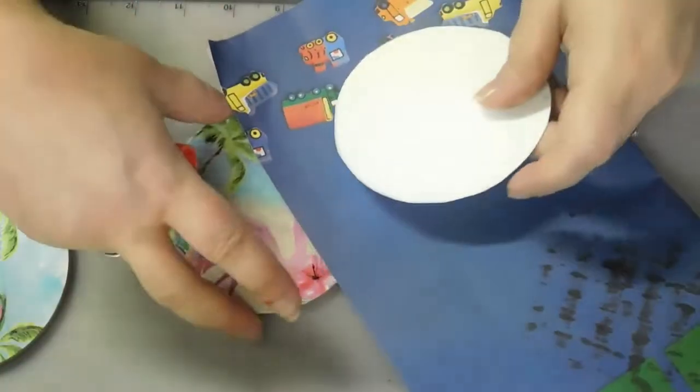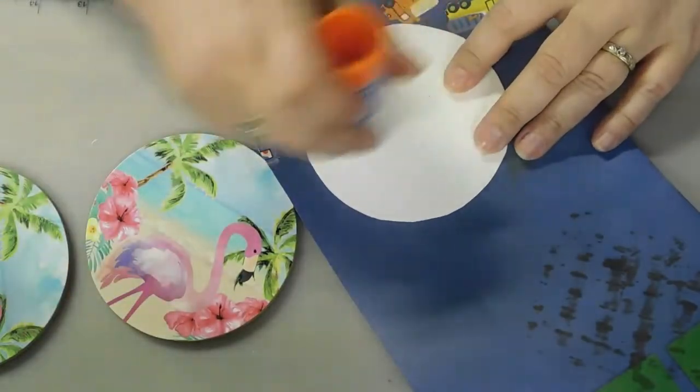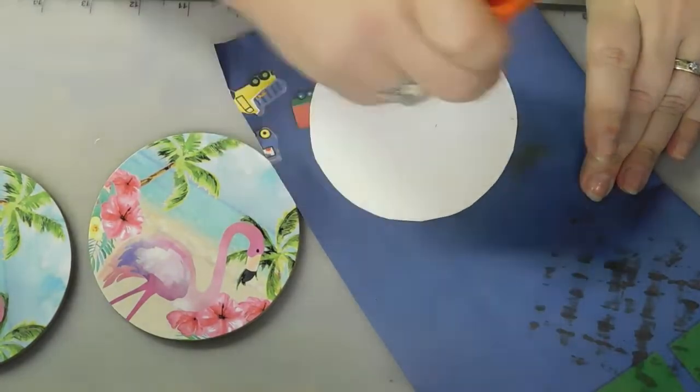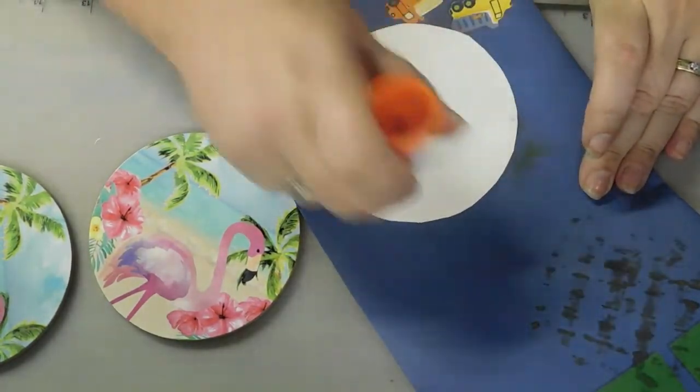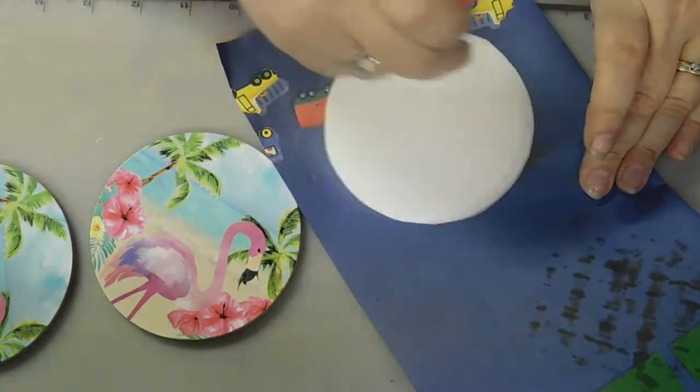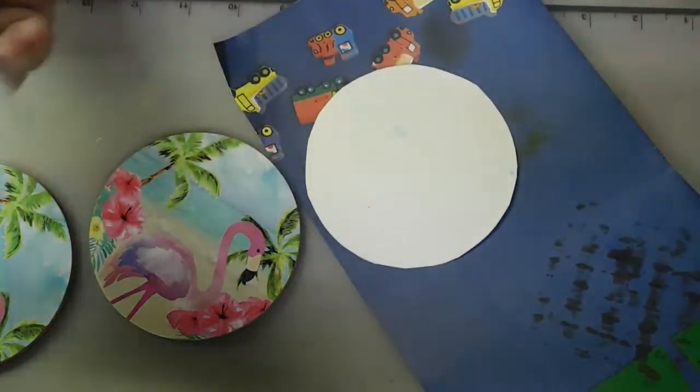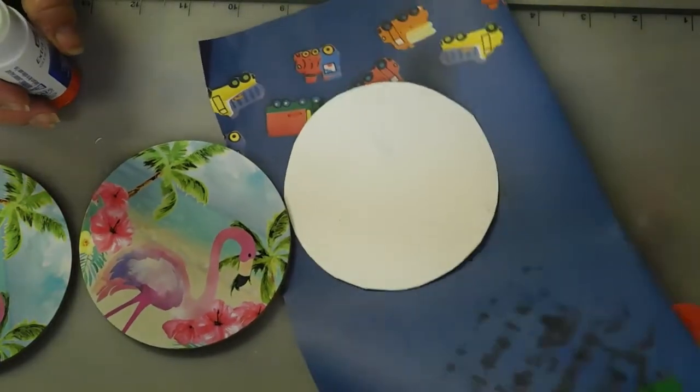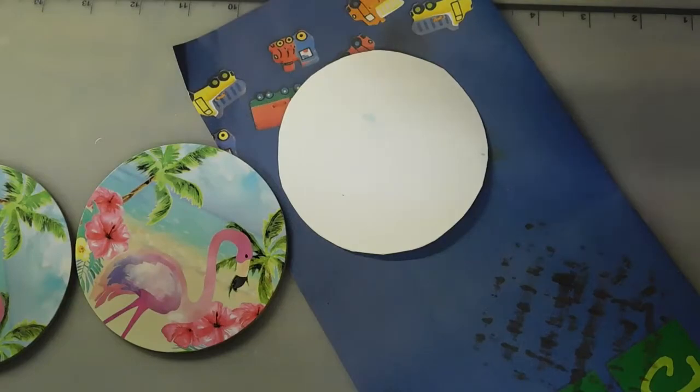And I'm just going to use this Elmer's on here. Get my scrap paper here. And then you just want an even amount across it. You know, kind of glop it on there because you're sticking paper to paper.